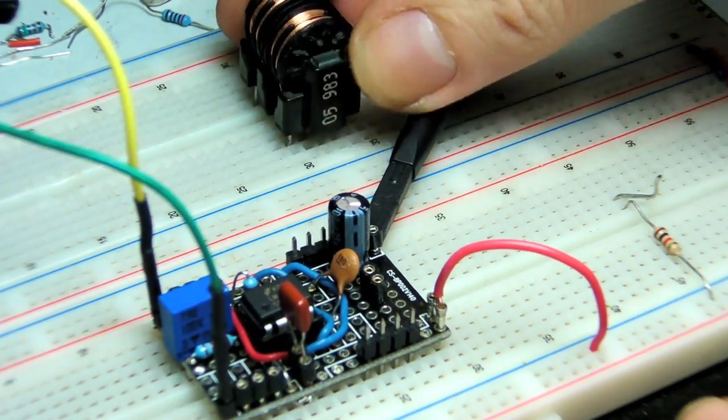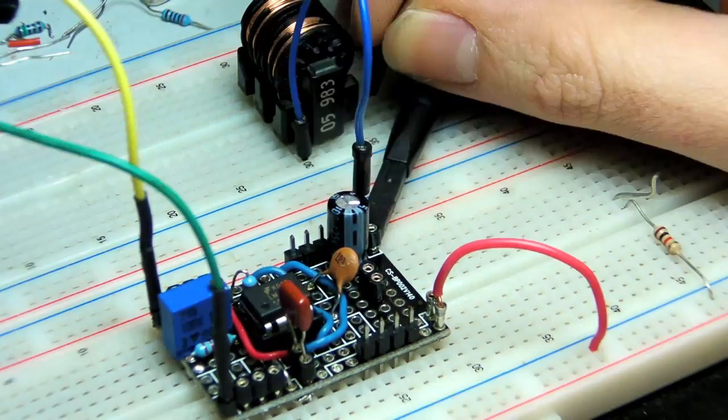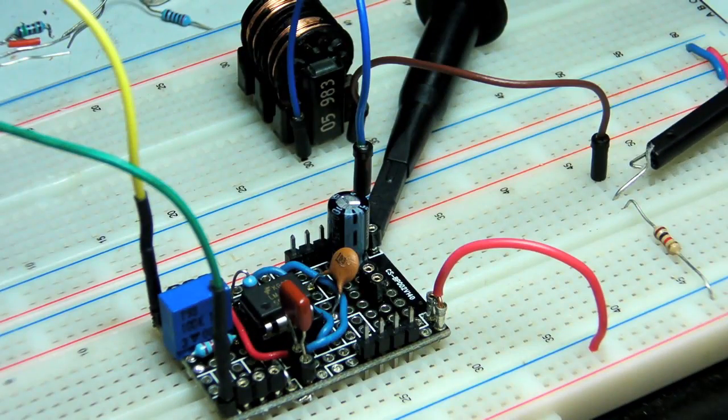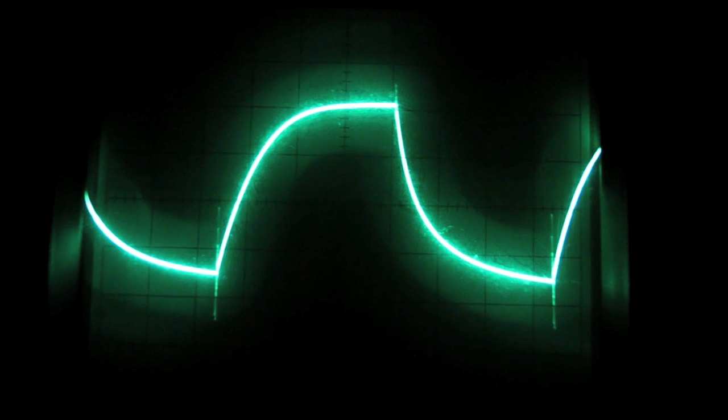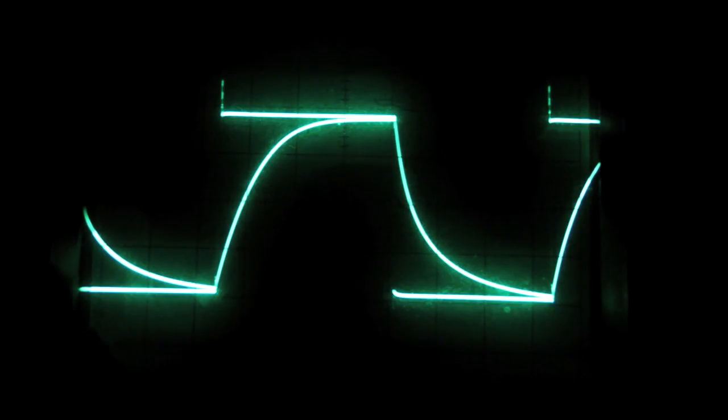Now, I'll leave that first probe hooked up and connect a second, seeing the signal after it's passed through an inductor. Much different. Curvy. And that curviness makes sense. It'd probably be easier to see if I just overlaid the original square wave signal. There we go.